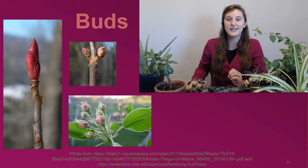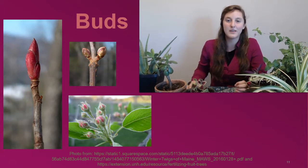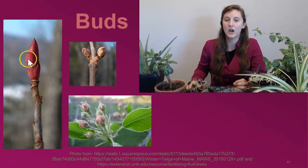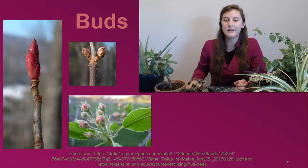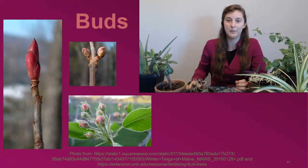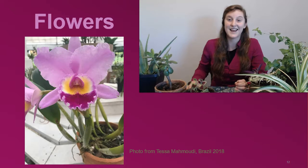Buds contain immature plant parts. A vegetative bud is the site of new leaf and stem growth — it contains a leaf or leaves and sometimes an embryonic shoot. This is an example of a terminal bud, and this is an example of an axillary bud. A flower bud includes the makings of one or more flowers. Flower buds are frequently larger than vegetative buds. Flowers are critical for plant reproduction. We're going to cover flower anatomy next time.